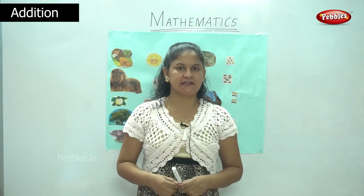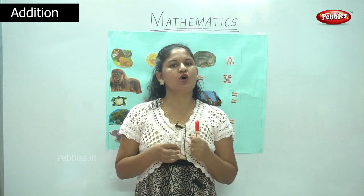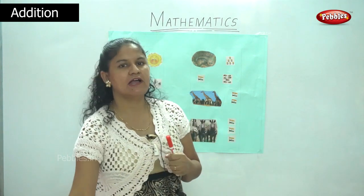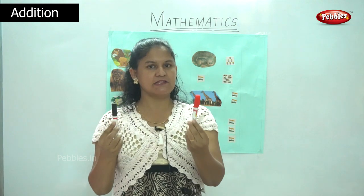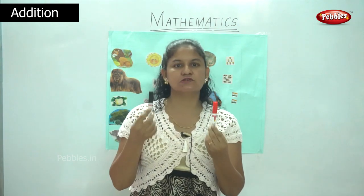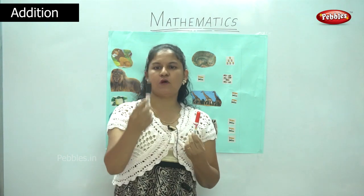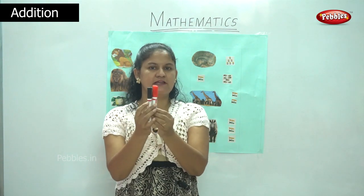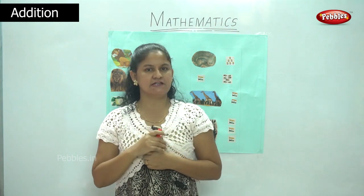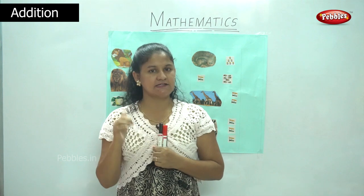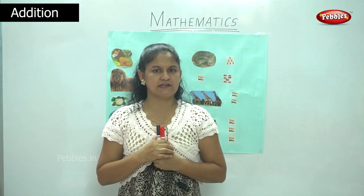Now we are going to learn addition. Addition is nothing but adding two or more things. I have one pen in this hand and one pen in this hand. So I want to know the total number of pens I am holding, so I will add one plus one. One plus one is two. So this is called addition — adding two or more things together to get an answer.